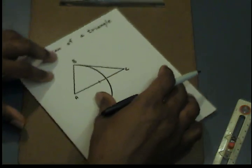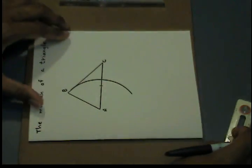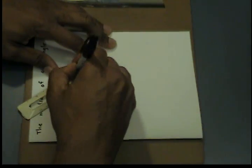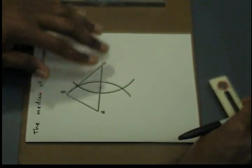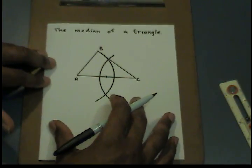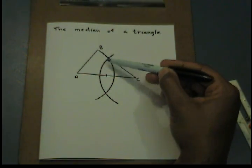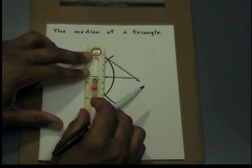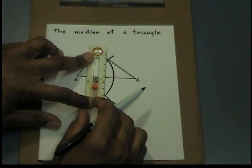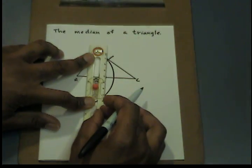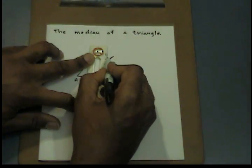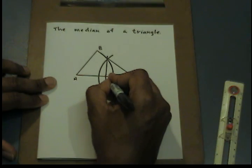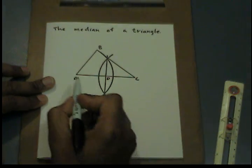It's slightly easier to turn my page to make the second arc. Next, where the arcs intersect on the top and the bottom, I'm going to draw a line. This point I'm going to call D, which is the midpoint of AC.